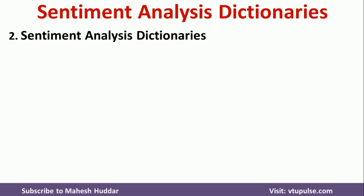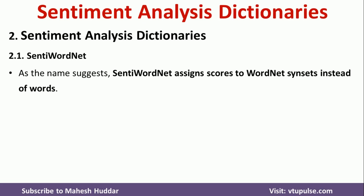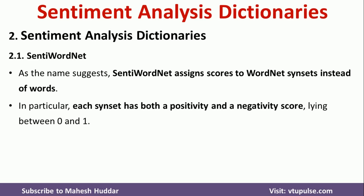The first dictionary is SentiWordNet. As the name suggests, SentiWordNet assigns scores to WordNet synsets instead of individual words. Each synset has both a positivity score and a negativity score, and those scores lie between 0 and 1.